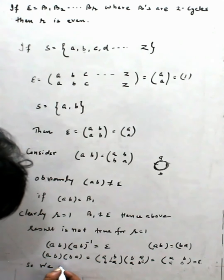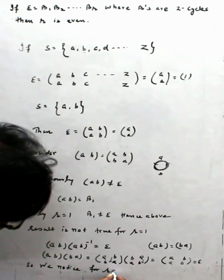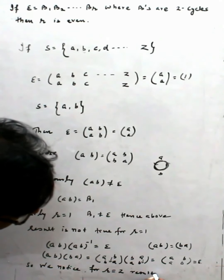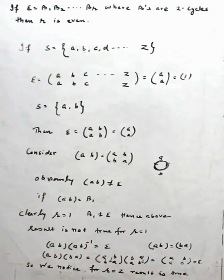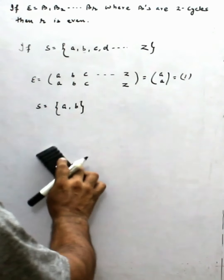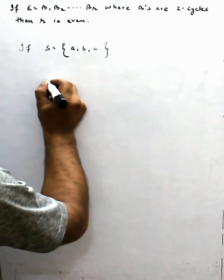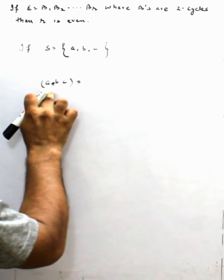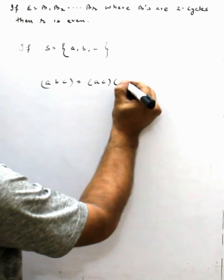We notice that for r = 2, the result holds — 2 is even. Similarly, we check for r = 3. If S = {a, b, c} with only 3 elements, we take the permutation (a b c), which is a cycle. We can write this in terms of transpositions as (a c)(a b). This product is obviously not identity.